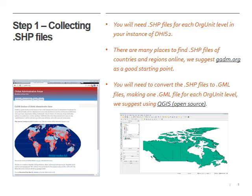You're going to have to save all of these shapefiles as GML files, and you'll need to save one GML file for each org unit level. For example, we have Canada split up into provinces, so that province level would be one org unit level. We'd save that as a single GML file, and also save a single GML file for all of Canada as the entire shape. Then we'd continue saving more for each level we go down — regions, sectors, whatever you've chosen in your instance.